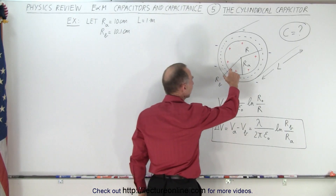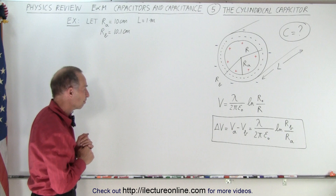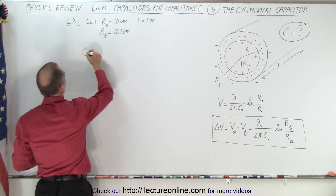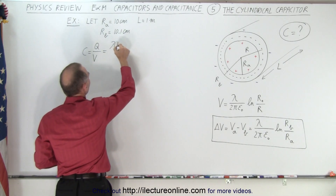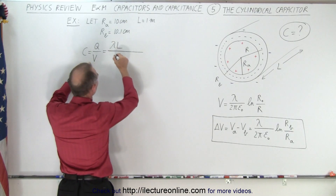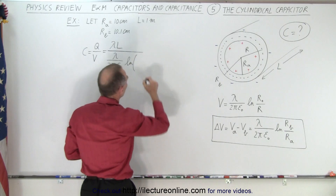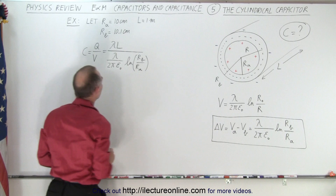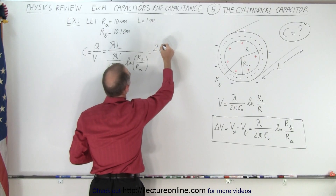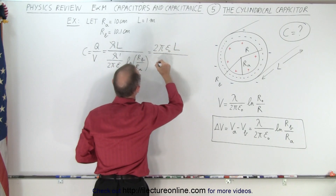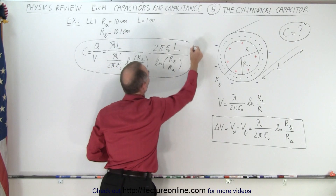It turns out if Ra and Rb are very close together, this is the best equation — it gives you the most accurate answer, but it's not that different from the other one, so we'll compare the two. The capacitance, by definition, is equal to charge divided by the voltage. The charge on a cylindrical capacitor is the linear charge density times the length, divided by the voltage, which is the linear charge density divided by two pi epsilon sub nought times the natural log of the ratio of the two radii — R sub B divided by R sub A. The lambda cancels out, and this can be written as two pi epsilon sub nought times the length divided by the natural log of Rb over Ra. That is the equation for the capacitance of a cylindrical capacitor.